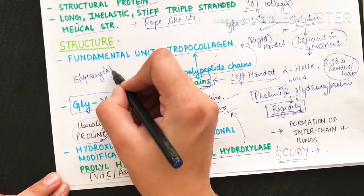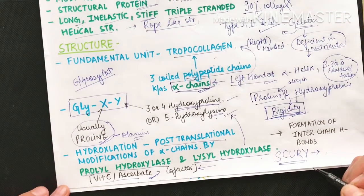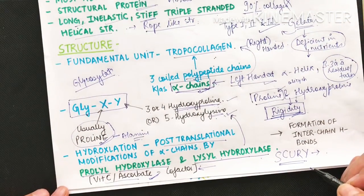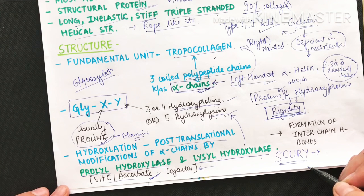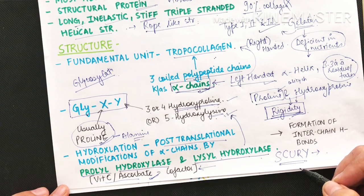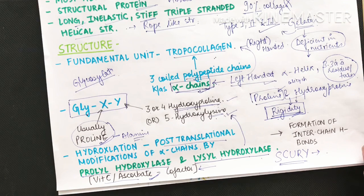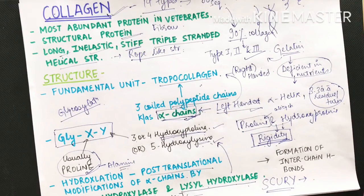Glycosylation also helps in the collagen process. What happens is that hydroxylysine's OH group gets glucose or galactose added, contributing to collagen biosynthesis.